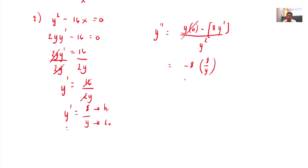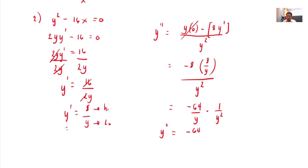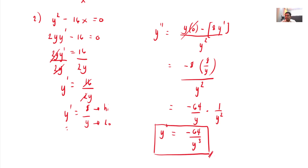So: 8 all over y, all over y squared. Negative 8 times 8 is negative 64, all over y. Times the reciprocal of y squared, which is 1 all over y squared. Therefore, y double prime equals negative 64 all over y cubed. That's the answer.